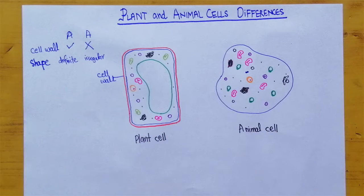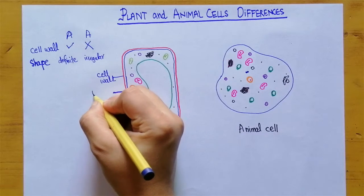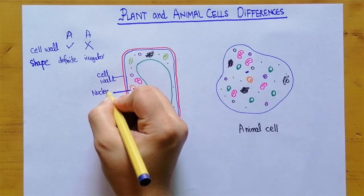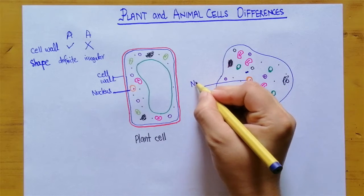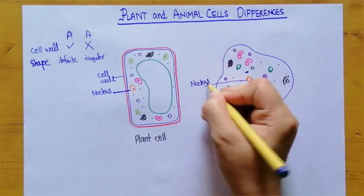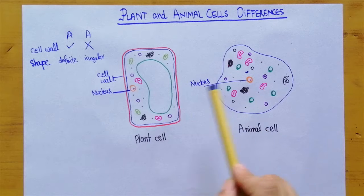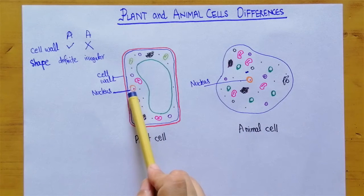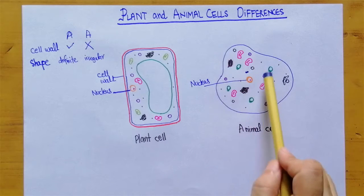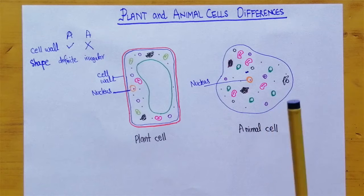The next difference is the position of the nucleus. The nucleus is present in both cell types, but its position differs. In the case of the plant cell, the nucleus is present at the side of the cell, but in the animal cell the nucleus is present in the middle part of the cell, which is another identification feature.